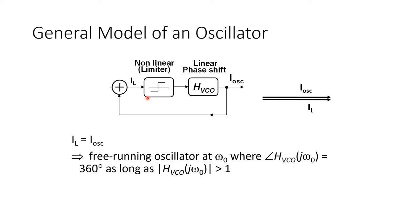The oscillation amplitude may simply be limited by the available supply voltage or maximum current limited by some current sources. That nonlinearity limits the amplitude of the oscillations, and such an oscillator just continues to free-run at the frequency where H_VCO has 360 degrees of phase shift. This is an oscillator without injection, so the current waveform's phasor representation has the same magnitude and phase because there's no injection.